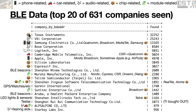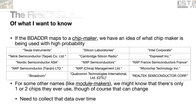Looking at Bluetooth Low Energy, the top thing is actually Texas Instruments, then Silicon Labs — hey, those are the two things Veronica's exploits were for — then Expressif, T-Link, and various Chinese companies. The hypothesis is that if a company advertises a BD Adder from Texas Instruments, they probably were just lazy and didn't change it out, and it's probably running Texas Instruments silicon. This is the first traces of what I really want to know: if a BD Adder maps to a chip maker, that gives a strong high-probability indication that the advertising device probably uses that particular chip.